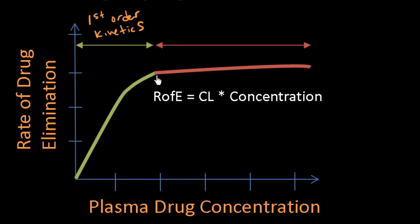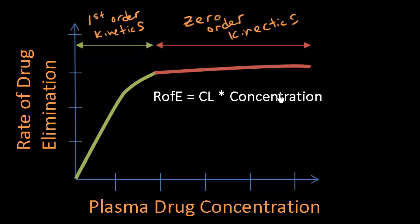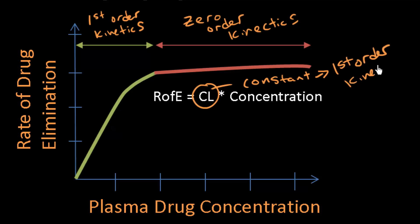Once all enzymes are saturated, increasing plasma drug concentration no longer increases the rate of elimination — that is zero-order kinetics, where the slope of the graph is approximately zero. Clearance is a constant only under first-order kinetics, which applies to most drugs at most dosages. Clearance is not constant once we reach zero-order kinetics — an important distinction to know.